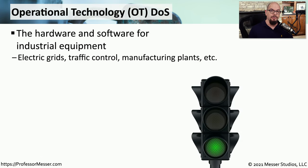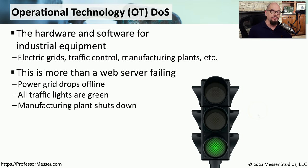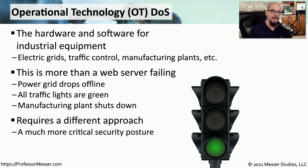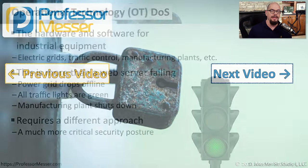Our society relies on industrial equipment to maintain things like electric grids, traffic lights, and manufacturing plants. But if an attacker is able to take advantage of these operational technology environments — or OT environments — they could create denial of service situations with much more at stake than having a web server become unavailable. A denial of service of operational technology means the power grid stops operating, or traffic lights all turn green in all directions, creating significant problems over a very large area. There's a very different security posture required for OT — you can't simply put a firewall in place. These technologies handling critical infrastructure require a completely different approach to segmentation and protection.